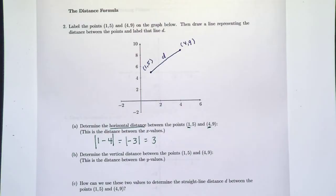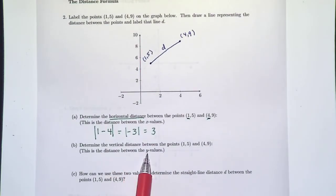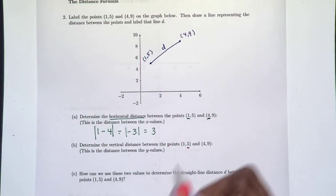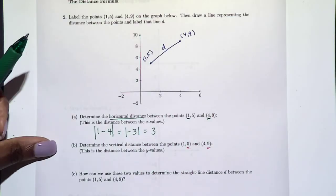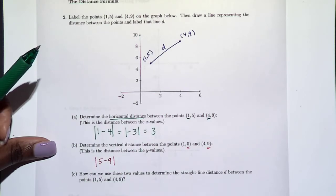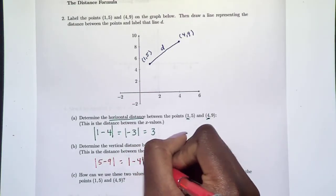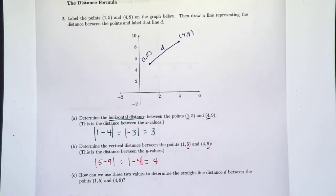We can do the same with the vertical distance — that's the distance between the y values five and nine. We can do either five minus nine or nine minus five; it doesn't matter because we take the absolute value either way. So we get the absolute value of negative four, which is four. The distance between these two points along the y-axis is four.